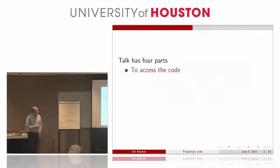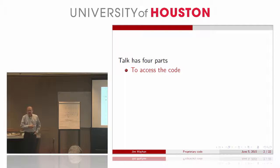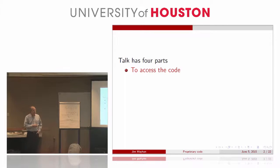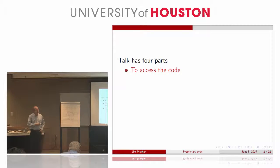This talk has four parts. The first question is: how do I find the code? Then, once I've found the code, what's out there right now? What do we plan to deliver in the next 12 months or so? And then I'll have a quick summary and acknowledgments.